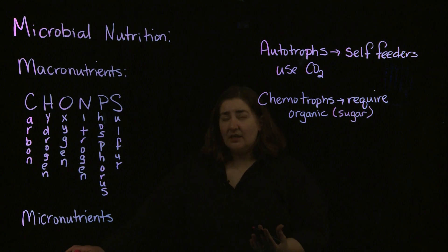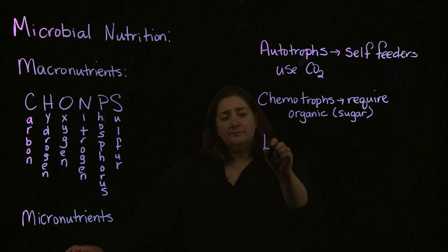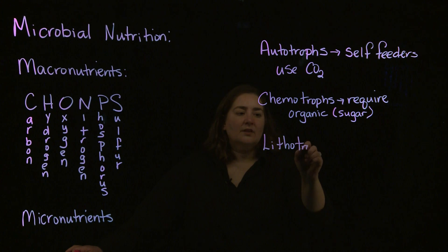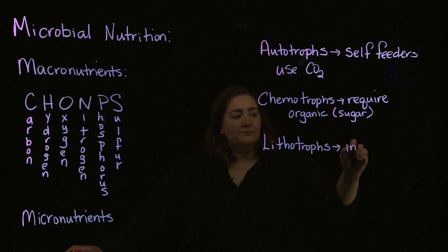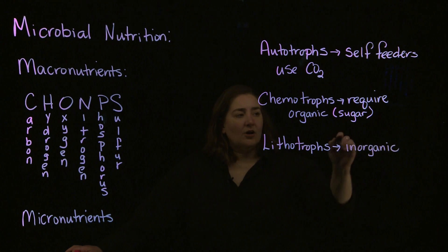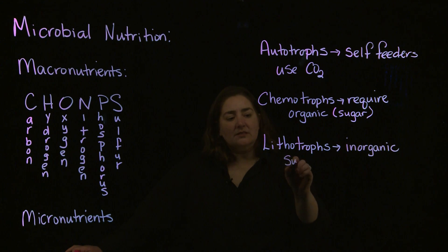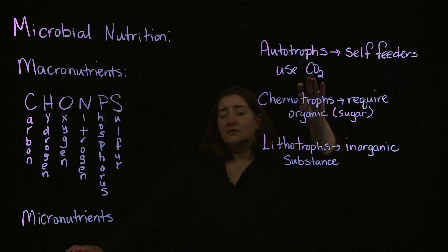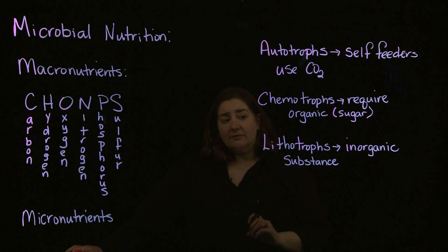There's one other classification between the autotrophs and the chemotrophs — the lithotrophs. Lithotrophs are going to use an inorganic substance as part of their metabolism. Sulfur commonly is one, nitrogen can also be used, but the lithotroph uses some inorganic substance that doesn't have carbon associated with it. Autotrophs and chemotrophs both require carbon; the lithotrophs don't. That's the main distinction between them.